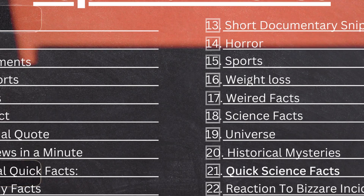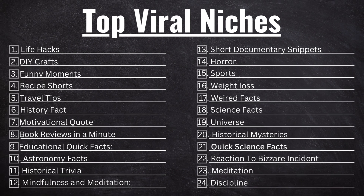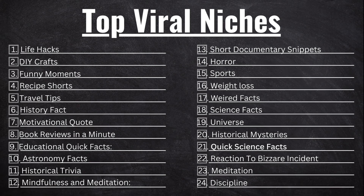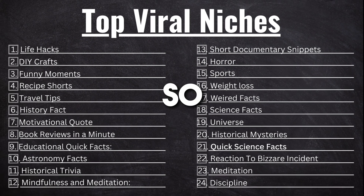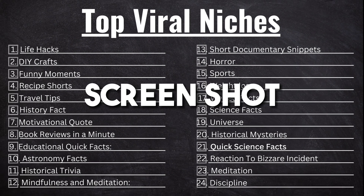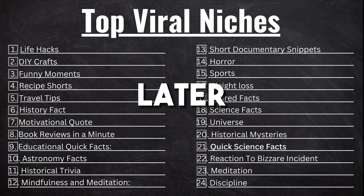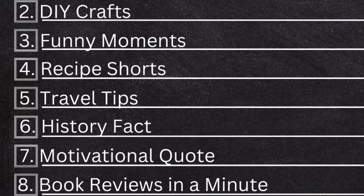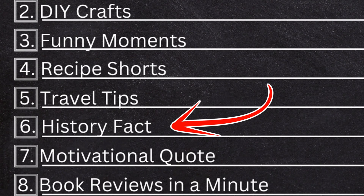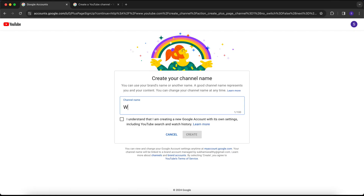Our first step is to choose a topic or a niche for your YouTube Short channel. I've created a table of all these viral niches that you can choose from, so make sure you take a screenshot for later. I'm gonna choose history facts as a niche.